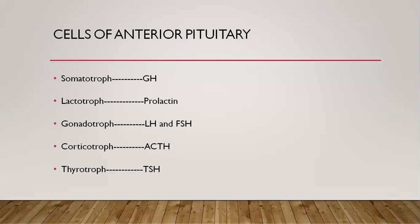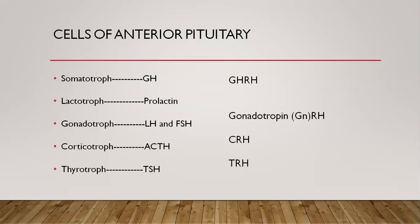The anterior pituitary is made up of basically six types of cells. First are the somatotrophs — the growth hormone-producing cells — and they are the most abundant, making up about 50% of the pituitary. Then you have the lactotrophs, which produce prolactin; the gonadotrophs, which secrete both LH and FSH; the corticotrophs, which secrete POMC, which then breaks down into several components including ACTH; and the thyrotrophs, which produce TSH.